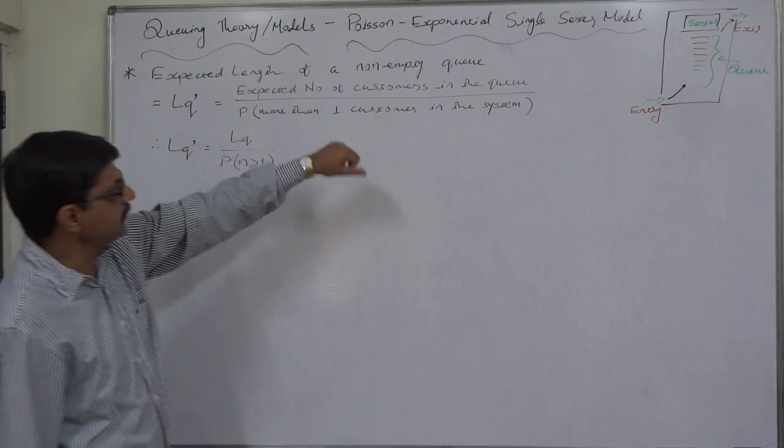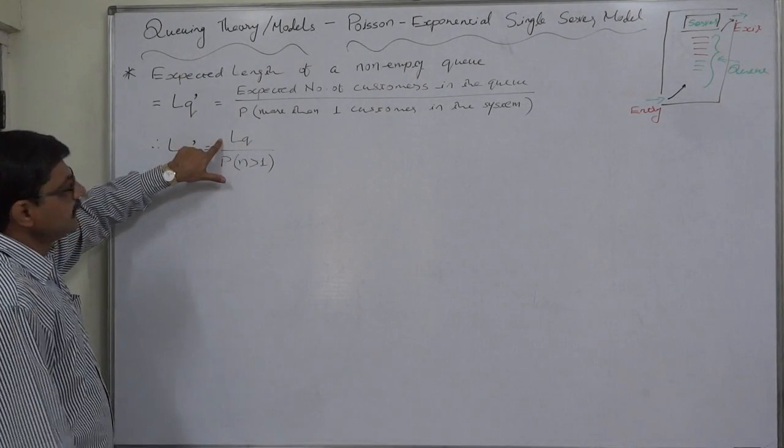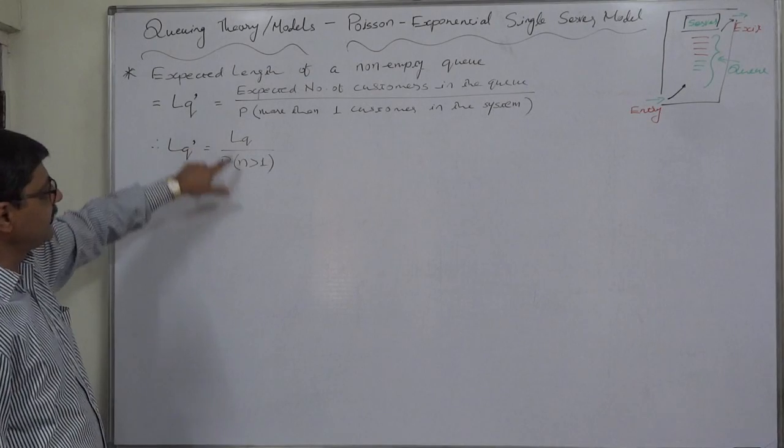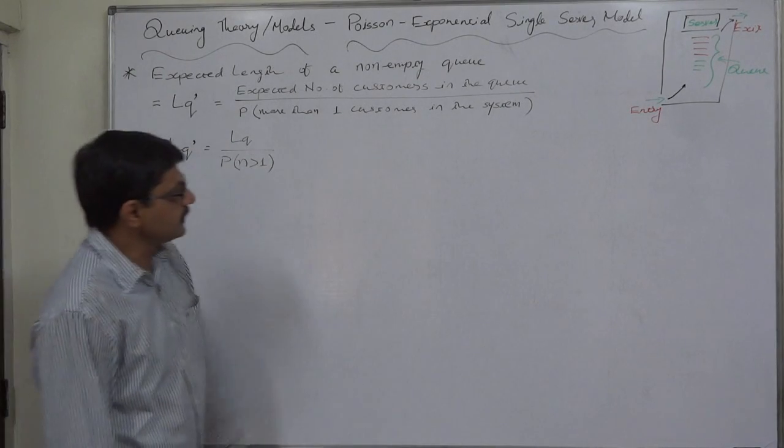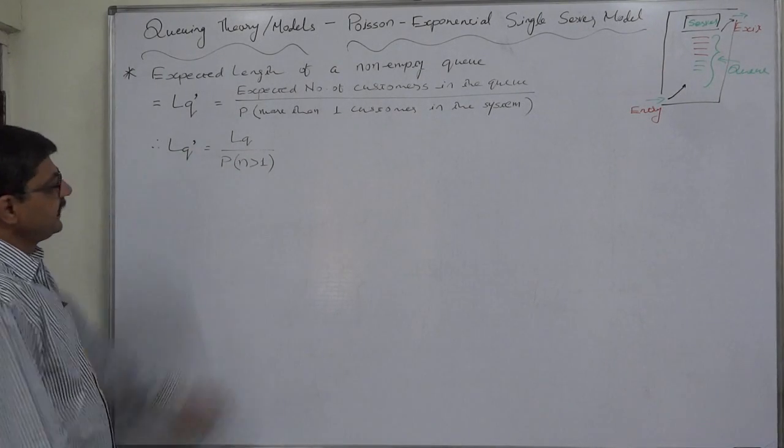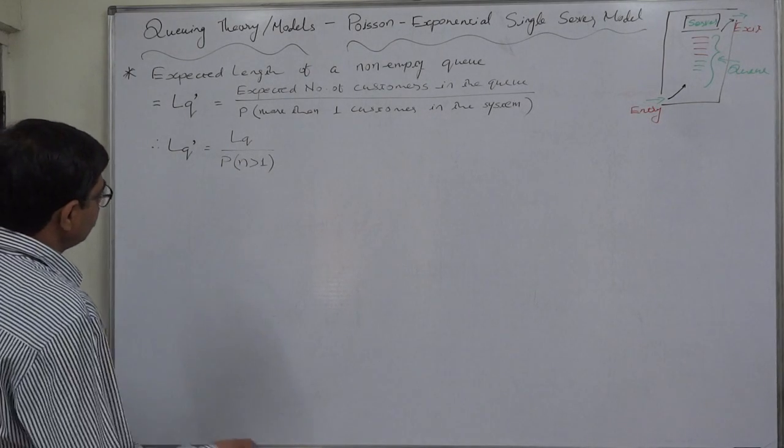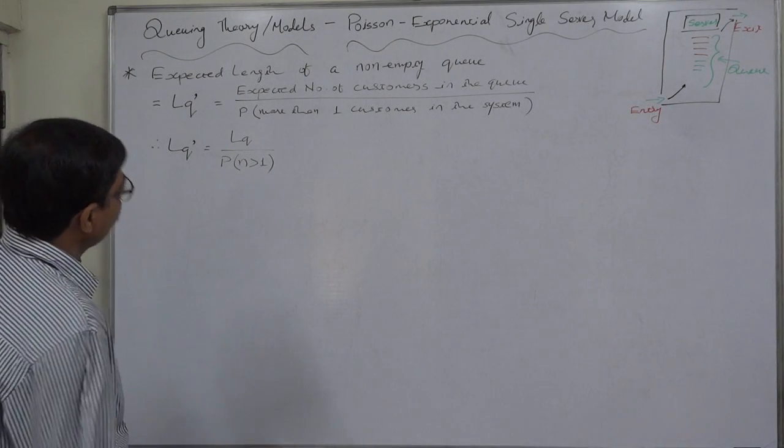Expected number of customers in the queue that we derived was lq divided by probability of more than one customers, that is n greater than one. Probability of n greater than one, and n indicates the number of customers in the system.